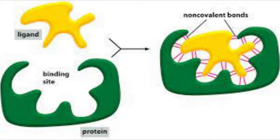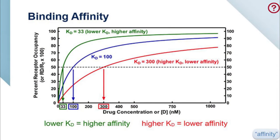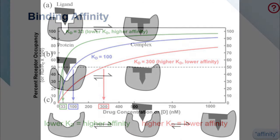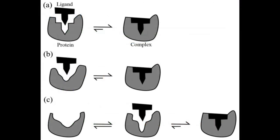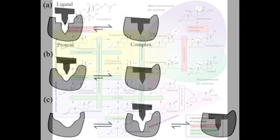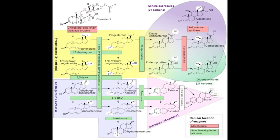Binding affinity refers to how strongly or easily the antiandrogen attaches to an androgen receptor — think of it as how likely a hormone is to stick to its matching receptor. In this case, the matching receptor would be the androgen receptor, matching the antiandrogen or any other androgens like testosterone, DHT, androstenediol, and more.